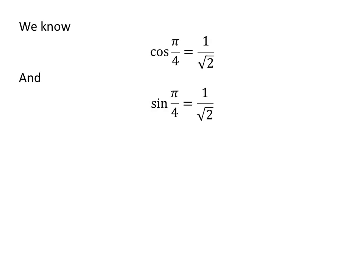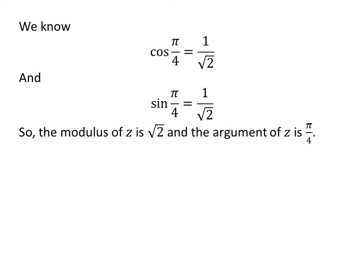We know cosine of pi upon 4 is equal to 1 upon square root of 2, and sine of pi upon 4 is equal to 1 upon square root of 2. So, the modulus of the complex number 1 plus iota is square root of 2, and the argument of the complex number 1 plus iota is pi upon 4.